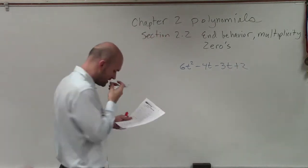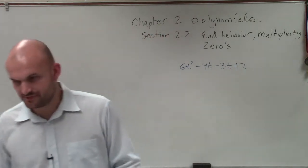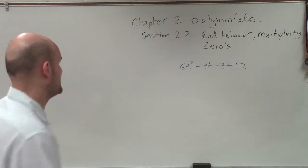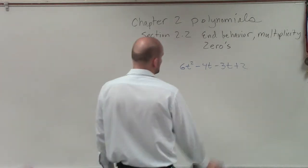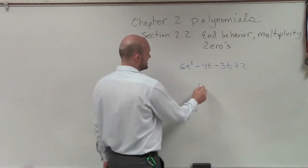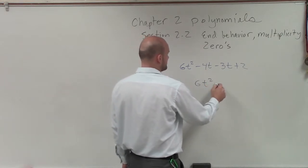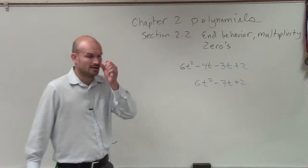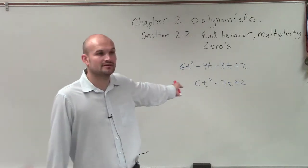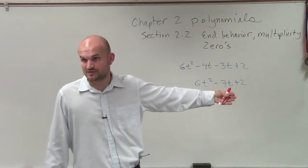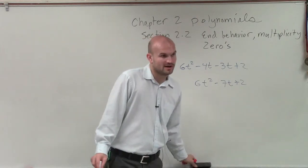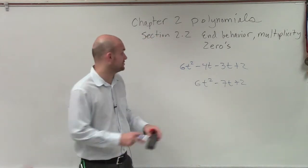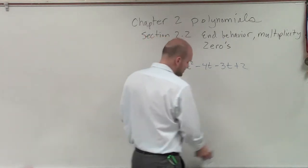Alright. Now, this one can get kind of confusing because technically you can combine these two terms, right? You could combine this to 6t squared minus 7t plus 2, right? But then you're going to have to factor it using our AC method, which we're actually going to go over today. So if you didn't want to factor it this way, and you're like I don't know what to do from there, we can factor it by grouping again.